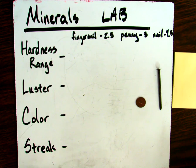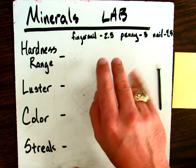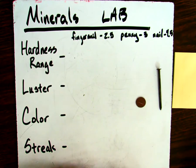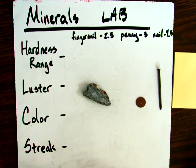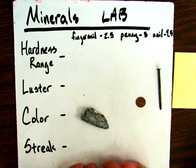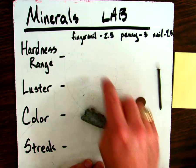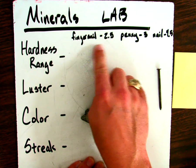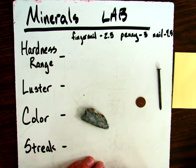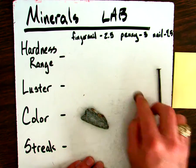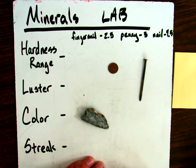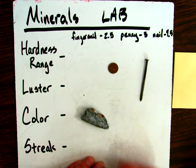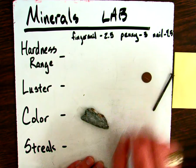Alright, so we're doing our minerals lab today. We are going to go ahead and get started with this particular sample. First thing we're going to start out with is our hardness range. Our fingernail is 2.5, pennies are 3, and a wire nail is around 4.5. So let's go ahead and get started with our test.